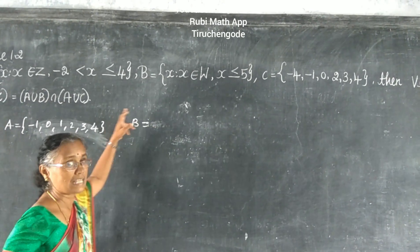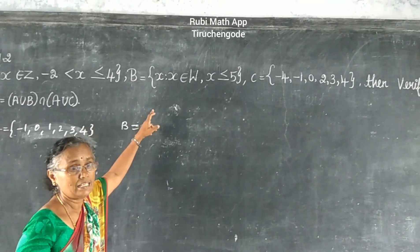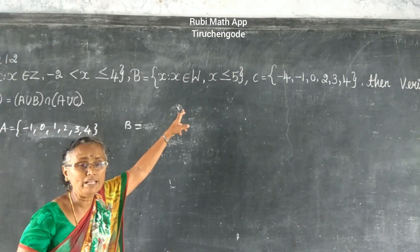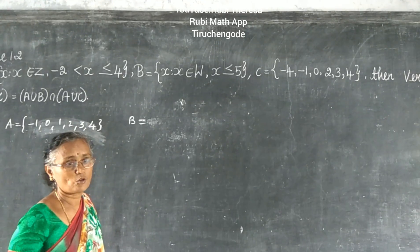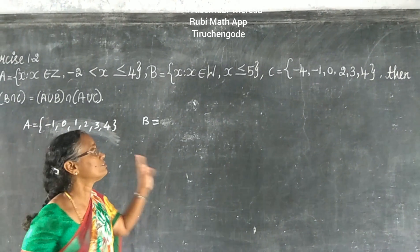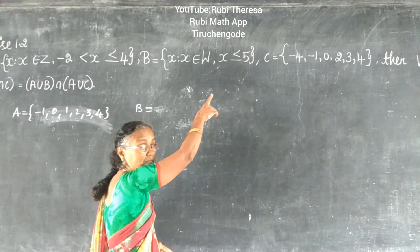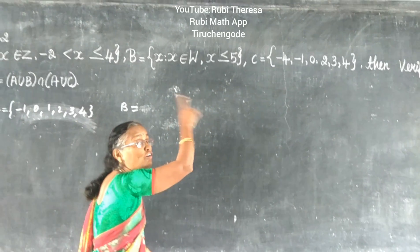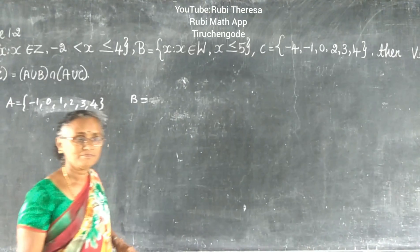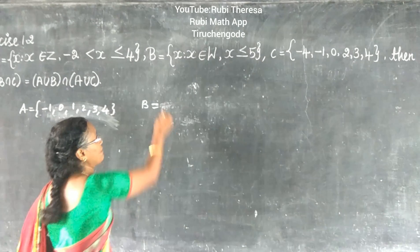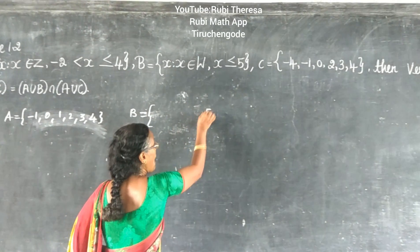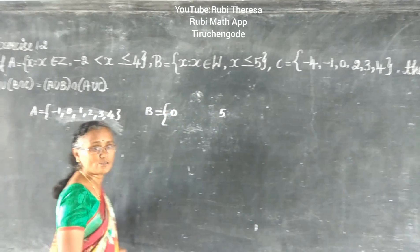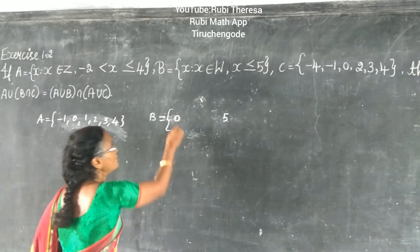Next one is B: x such that x is an element of W. W means whole numbers — starting with 0. X is less than or equal to 5, so up to 5. Starting with 0.